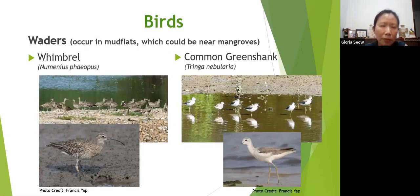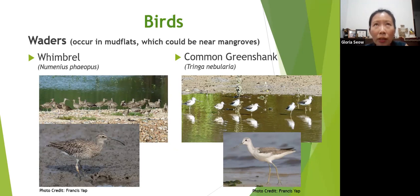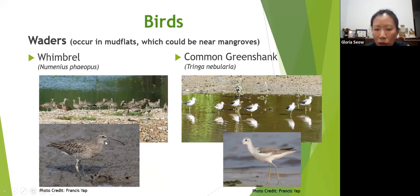Mangroves are sometimes located next to mud flats, especially in the tropics, where we have waders — also called shorebirds. Many of them are migratory. The whimbrel and the common greenshank fly all the way from Siberia to Singapore, and may overwinter here or fly on to Australia, New Zealand, or Indonesia. During the northern winter it's too cold with not enough food up north, so they fly to the tropics. They have very long bills to reach worms hidden under the mud.